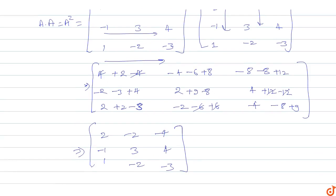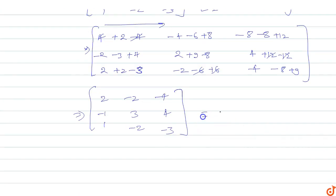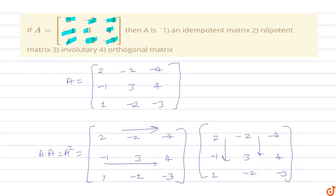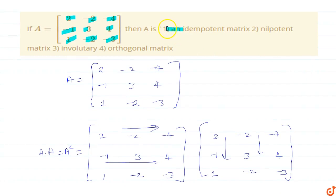So A squared matrix equals matrix A. Since A squared equals A, this is the condition of an idempotent matrix. So matrix A is an idempotent matrix, and option A is the correct answer. The condition for an idempotent matrix is A squared equals A, so this is the answer for this question.